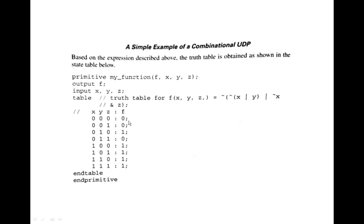So for each combination of input you can see here what is the output. Each combination of the input you can see the output. So end primitive, this is how the combination.